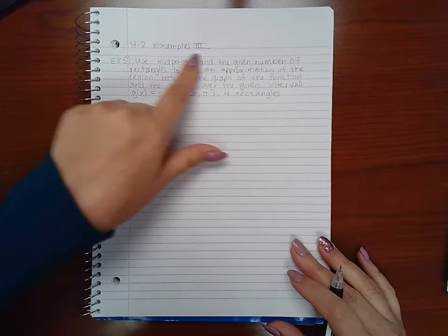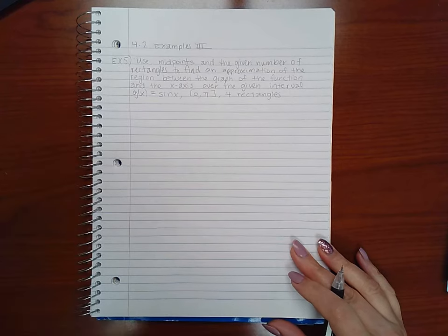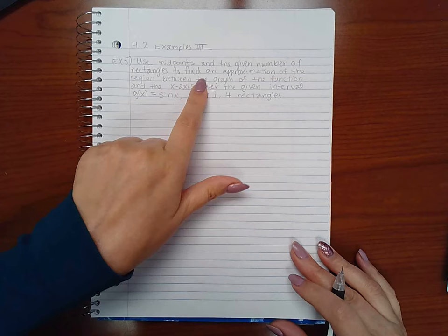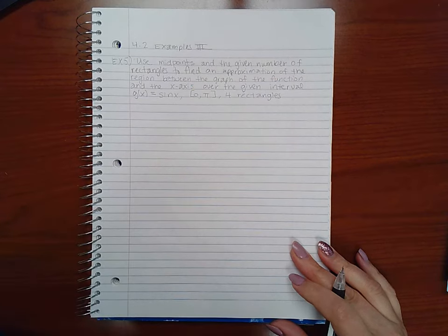This is now examples part 3. So example 5 says use midpoints and the given number of rectangles to find an approximation of the region between the graphs of the function and the x-axis over the given interval.